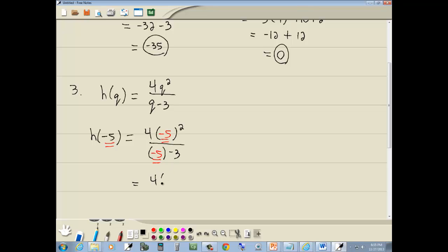Well negative 5 squared. Negative 5 times negative 5 gives us positive 25. Negative 5 and negative 3 gives us negative 8. 4 times 25 is 100 over negative 8.